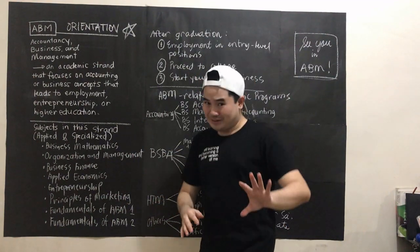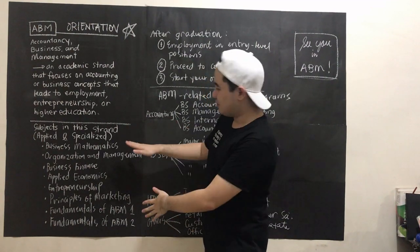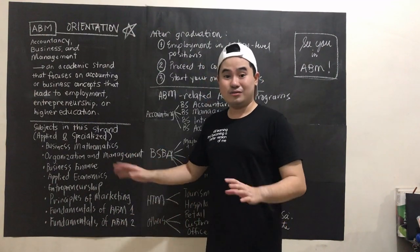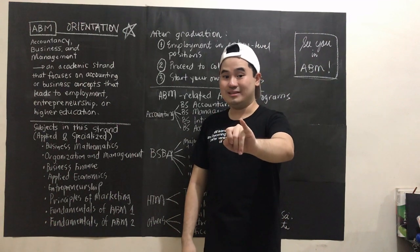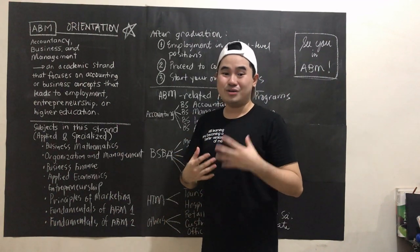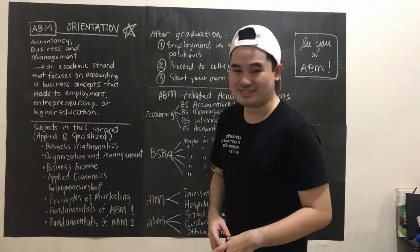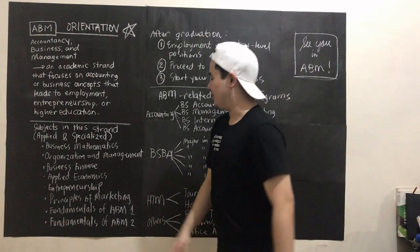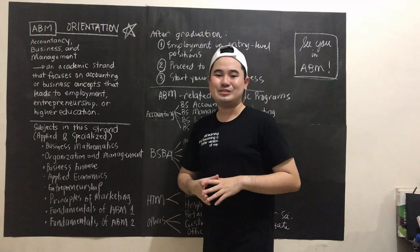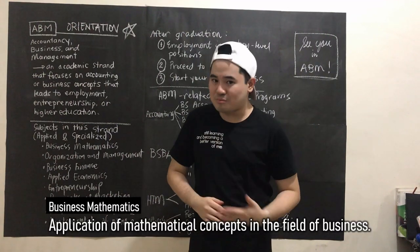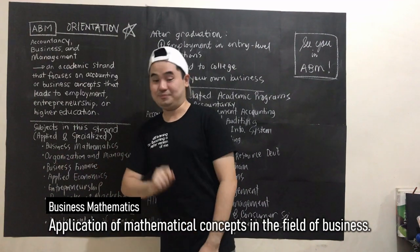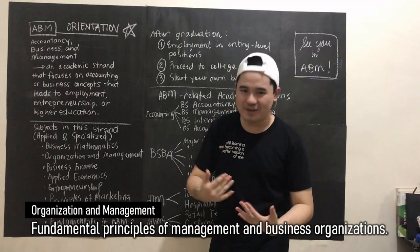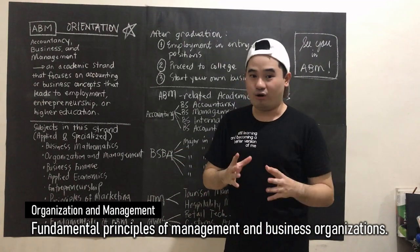You won't get away with the core subjects, but let's focus on the applied and specialized subjects. Applied and specialized subjects are those that are applied in the business field — kumbaga these are your major subjects, which are highly relatable in the field of business. So first we have Business Mathematics, which is the application of mathematical concepts in the field of business. And then Organization and Management is the subject which will teach you the very basic, founding principles of a business organization.